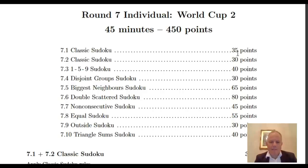You can see that for the classics you'd be expected at that pace to do them in three and a half and three minutes. The hardest puzzle in the round, the double scattered, takes eight minutes.